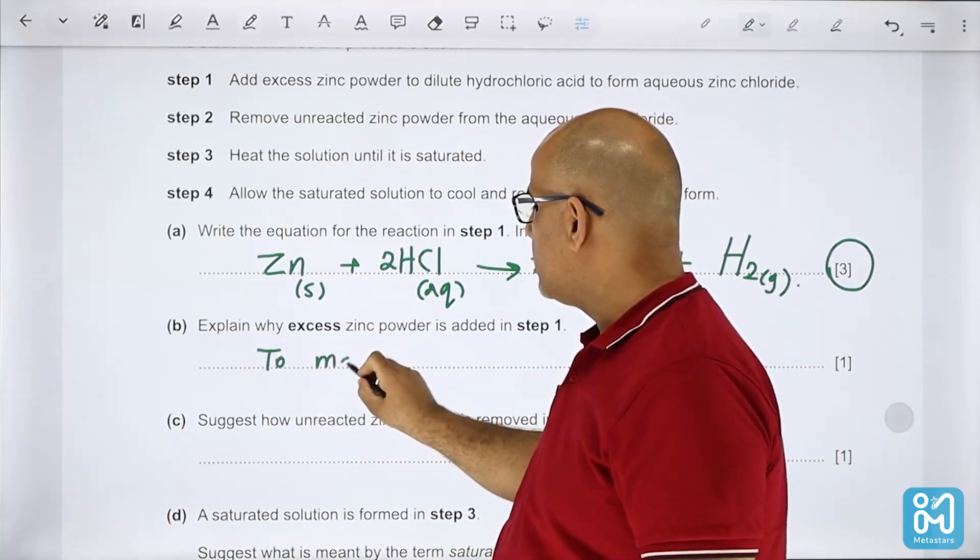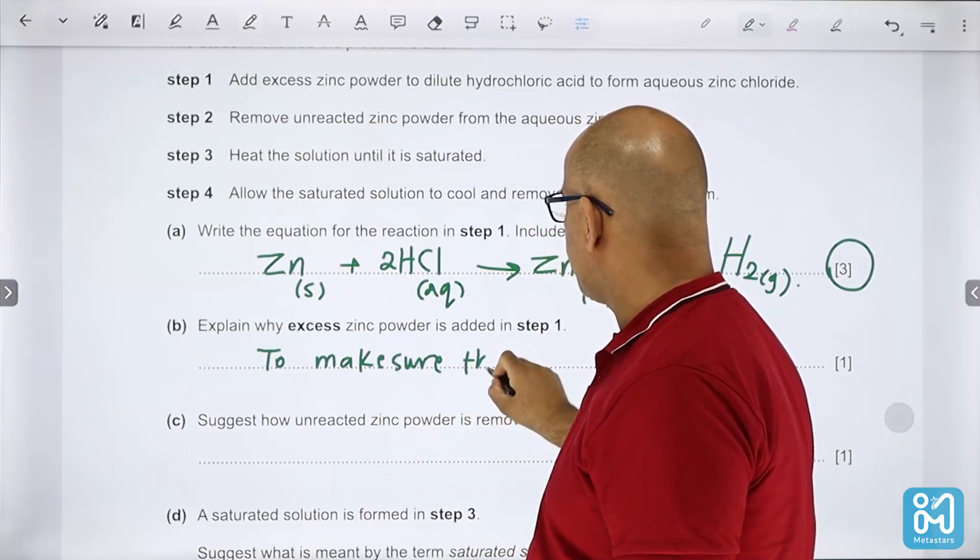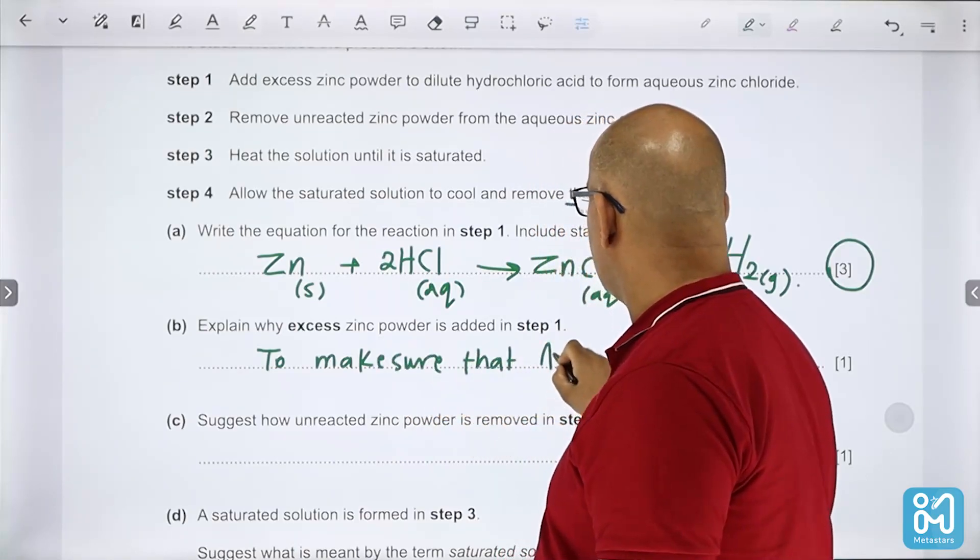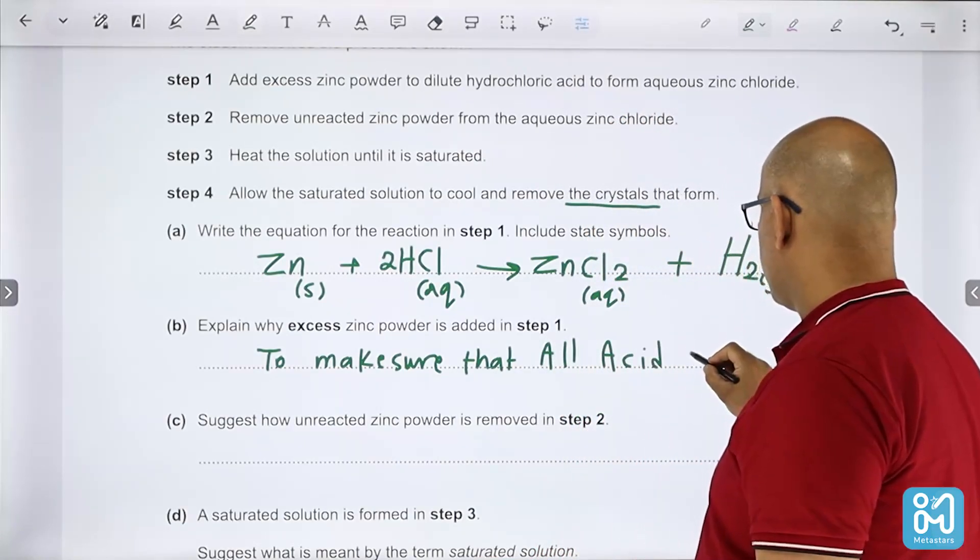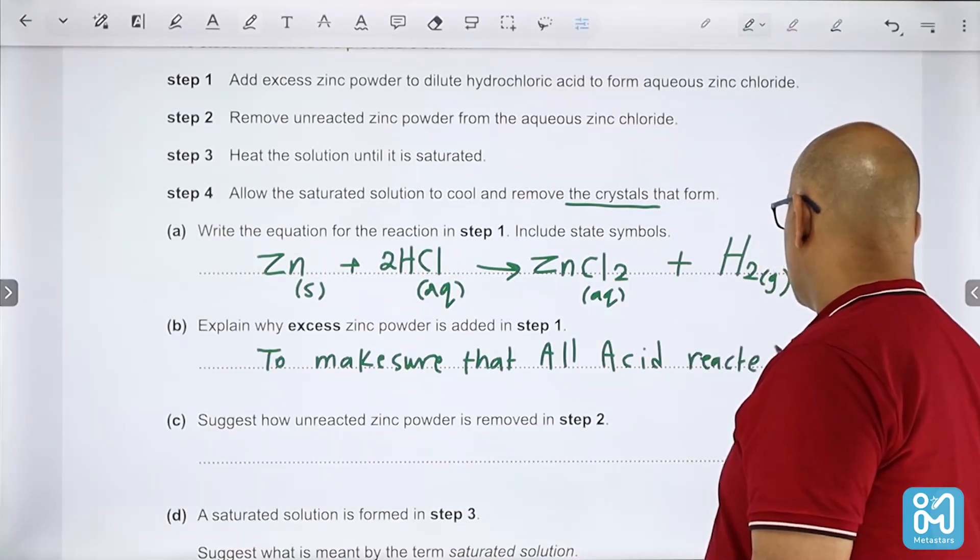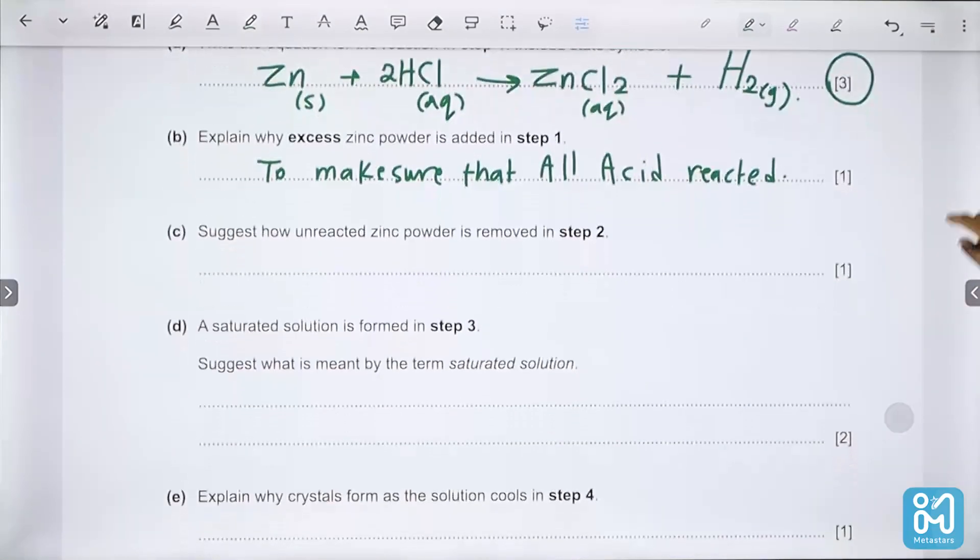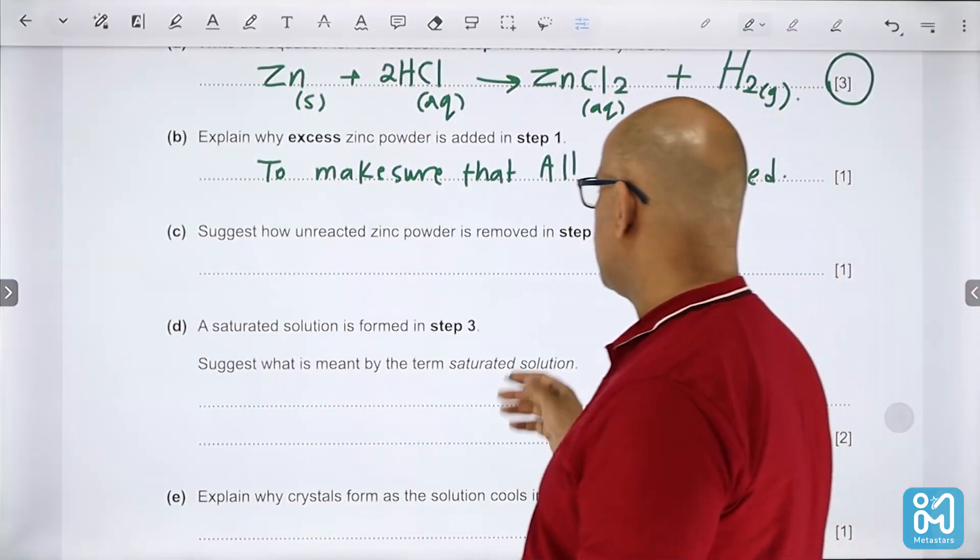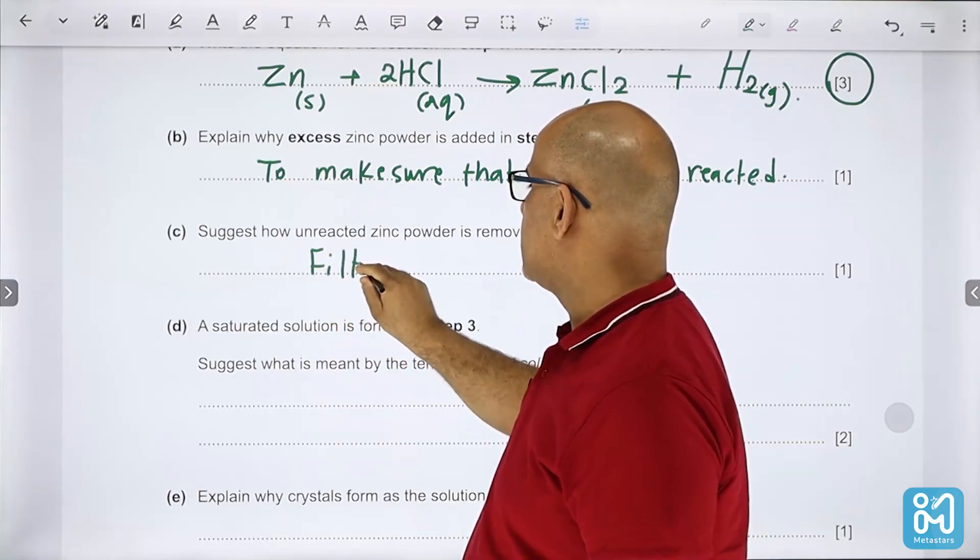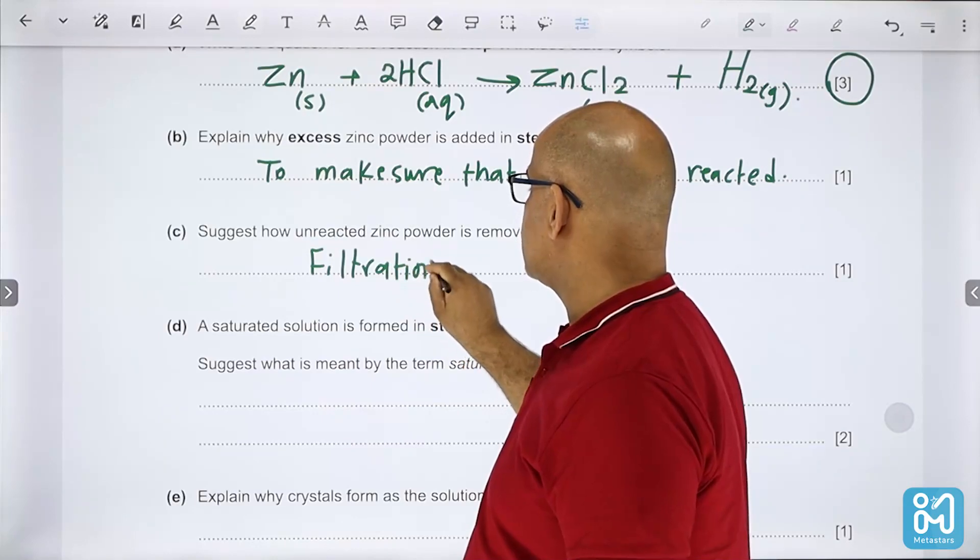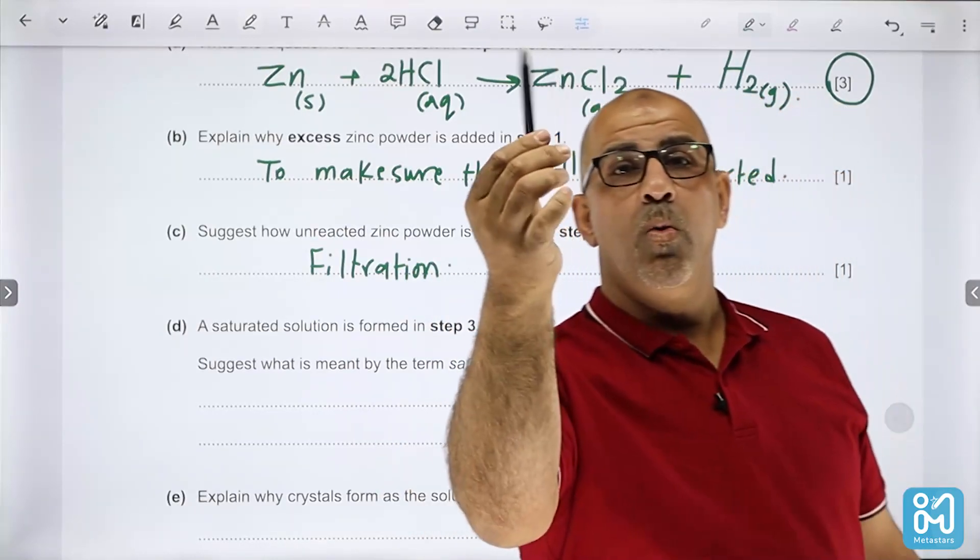State why excess zinc powder is added. To make sure or ensure that all acid reacted. How is the unreacted zinc powder removed? That's very easy because it's solid and insoluble, so it's by filtration.